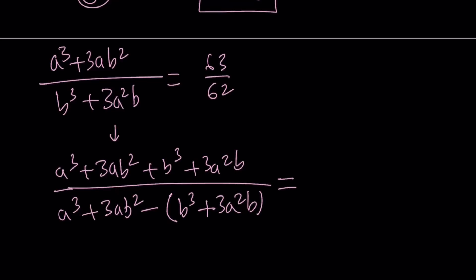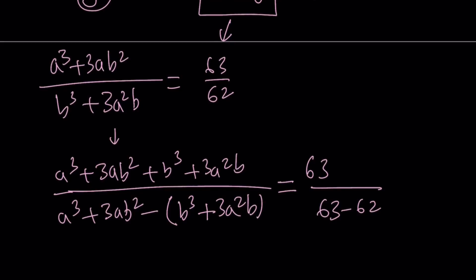Now, notice that I added the numerators in the numerator of the new fraction. So I'm going to be doing the same thing here, but this time with 63 and 62. So the numerator is going to be 63 plus 62. And the denominator is just going to be 63 minus 62. Let me just go ahead and write it that way first. And then obviously, I'm going to simplify that.